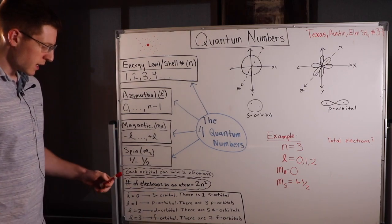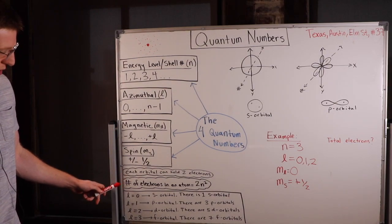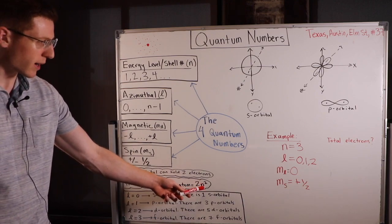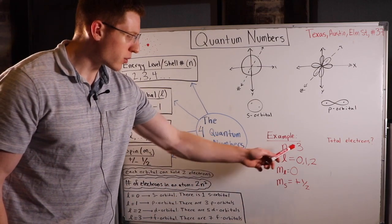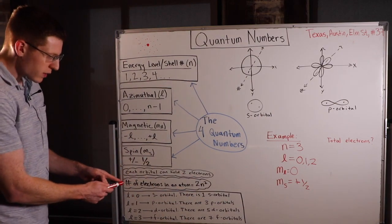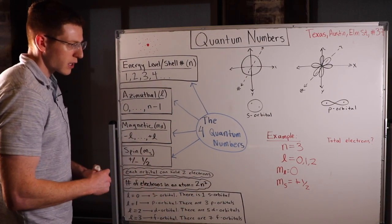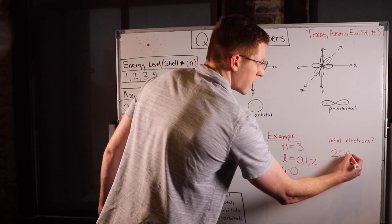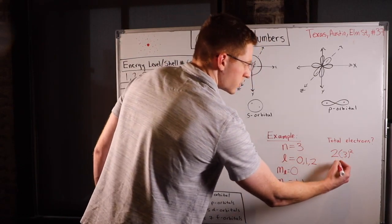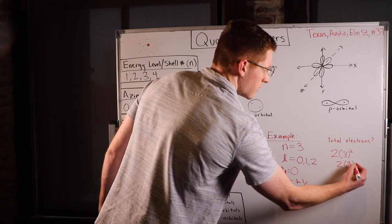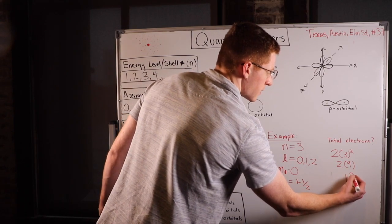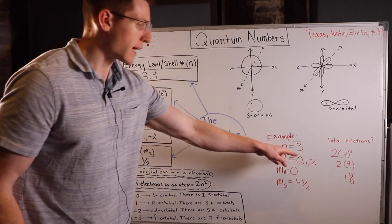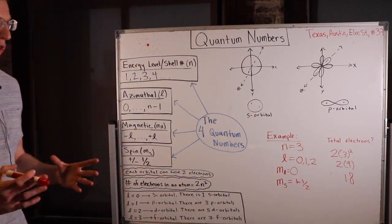Each orbital can hold two electrons. So the s orbital can hold two electrons, while each p orbital can hold two electrons — but if there are three p orbitals, all three can hold six total. An important trick: the number of electrons in an energy level is equal to 2N squared. So if N equals 3, the total number of electrons is 2 times 3 squared, or 2 times 9, which is 18.